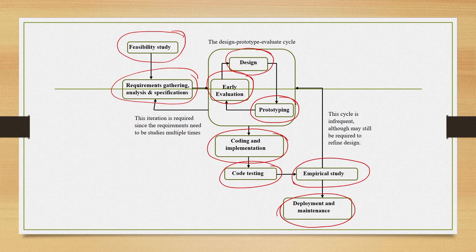Among these stages the relationships vary. For example, the three stages — design, prototype, and early evaluation — are connected in the form of a cycle. We first design, then create a prototype, then evaluate the prototype. Based on the evaluation results, we refine the design, create another prototype, evaluate again, and this goes on in a cycle.